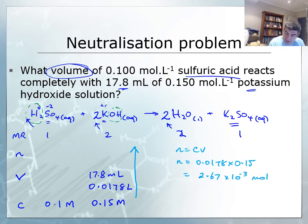Next I go across. My value is 2.67 times 10 to the minus 3. The mole ratio was 2 to 1, which means I need to halve that value to get the number of moles of sulfuric acid that have reacted. So I have 1.335 times 10 to the minus 3 moles of sulfuric acid.